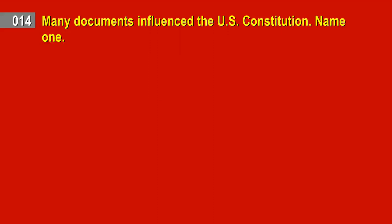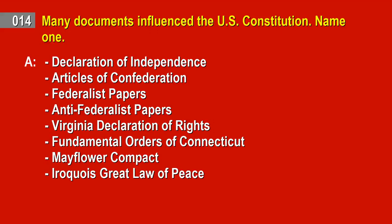Question 14. Many documents influenced the U.S. Constitution. Name one. Answer: Declaration of Independence. Articles of Confederation. Federalist Papers. Anti-Federalist Papers. Virginia Declaration of Rights. Fundamental Orders of Connecticut. Mayflower Compact. Iroquois Great Law of Peace.